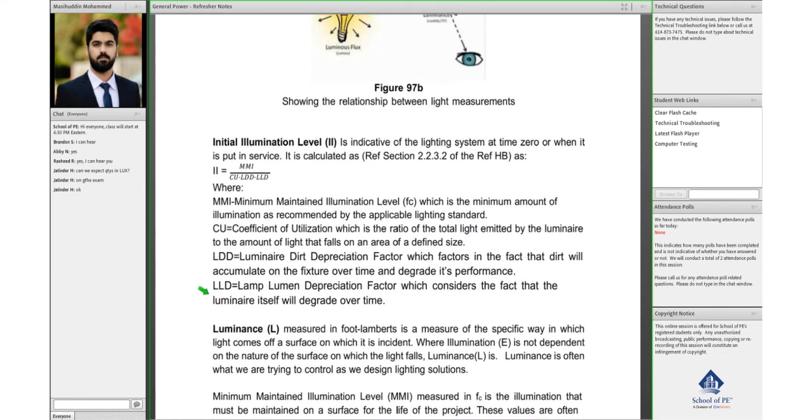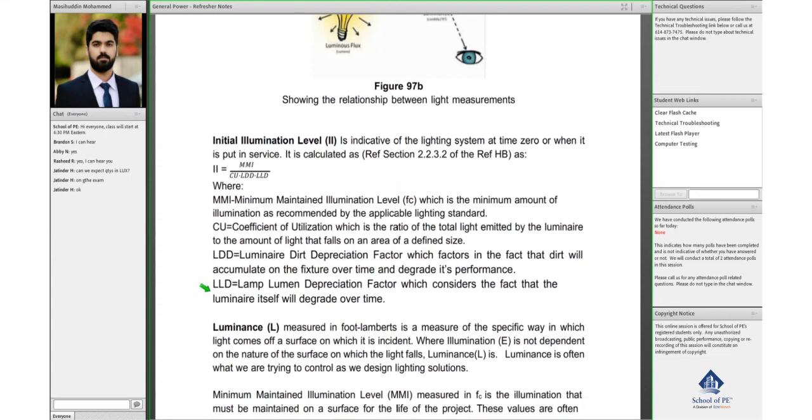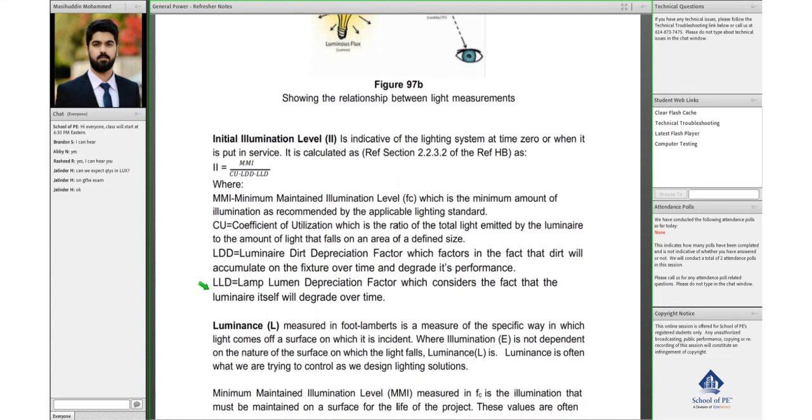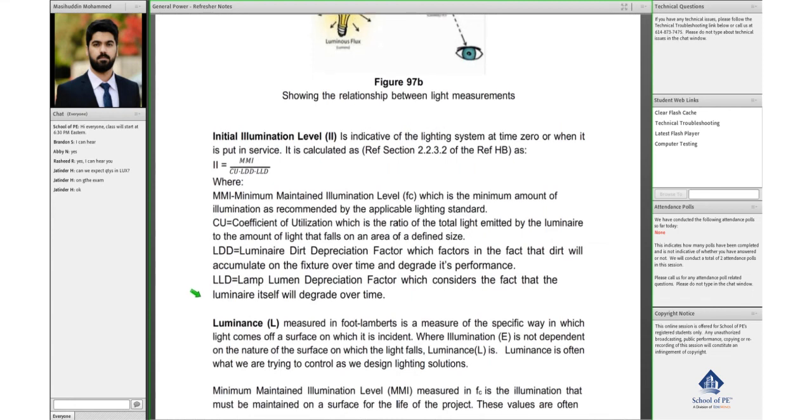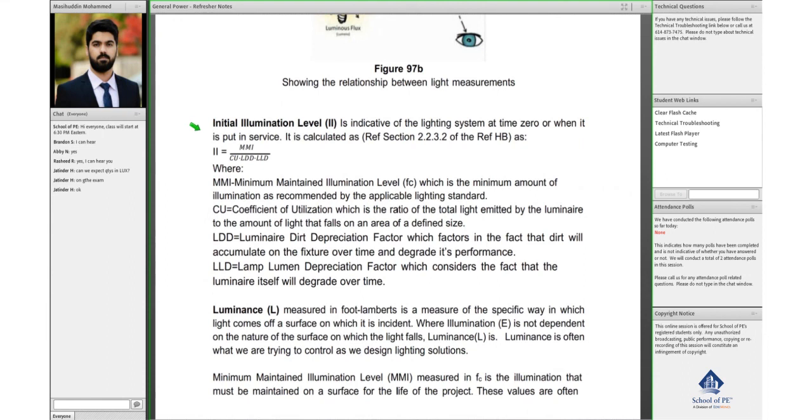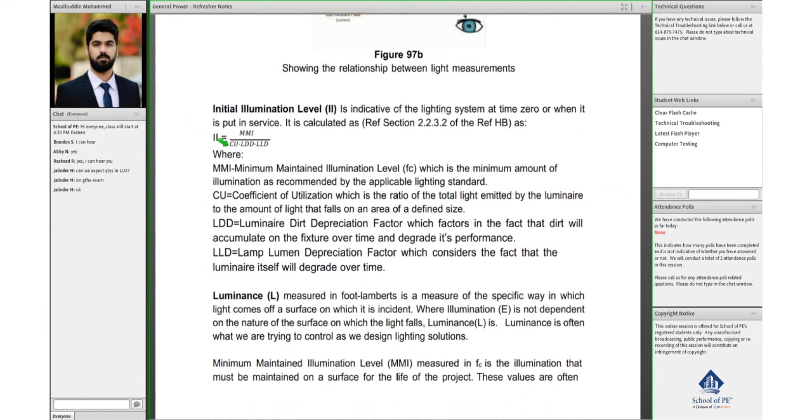And lamp lumen depreciation factor, which basically is the depreciation factor of the luminaire itself over the course of time. So initial illumination level II formula, that's the formula for it.